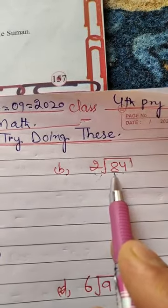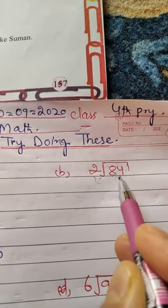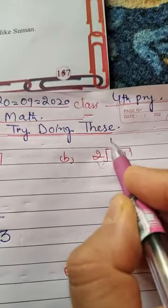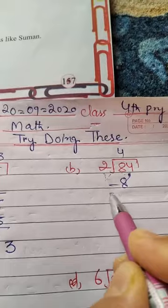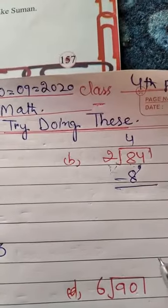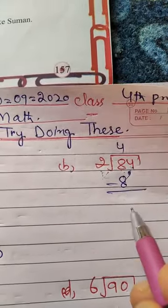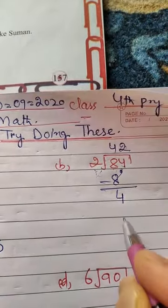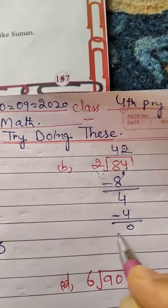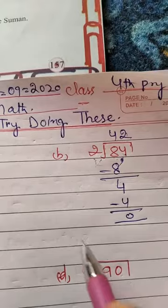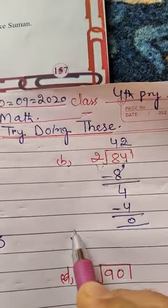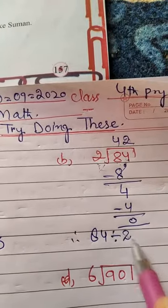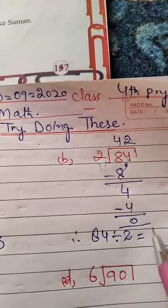84 divided by 2. 2 ones are 2, 2 twos are 4, 2 threes are 6, 2 fours are 8. 8 minus 8 is 0. 4 remains: 2 twos are 4, 4 minus 4 is 0. Therefore 84 divided by 2 equals 42.